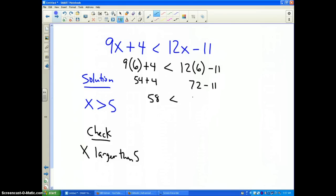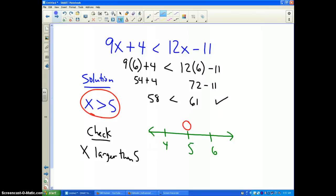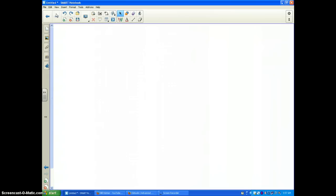This is 54 plus 4, which becomes 58. Hopefully that will be less than 72 minus 11, which is 61. So yes, it checks. Now the last part of solving a problem like this is they're going to ask you to graph the solution. All I need is the key number, which is 5. The solution is x is greater than 5, so I put an open circle on 5 and a squiggly line that goes all the way to the right with an arrow. That is the graph of my solution.